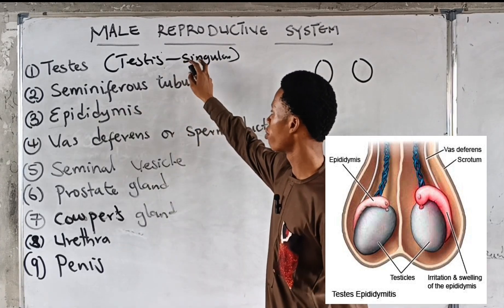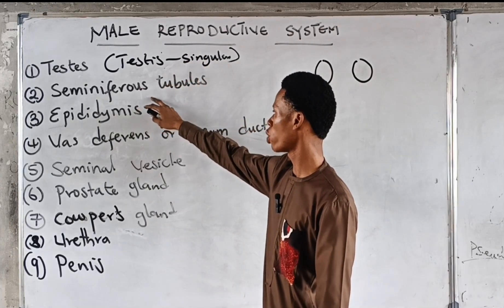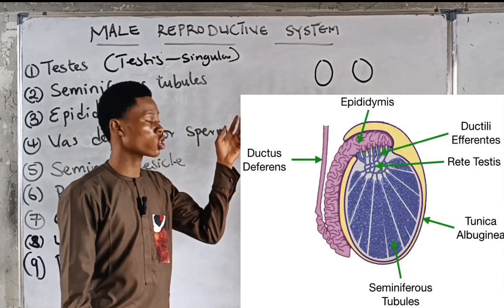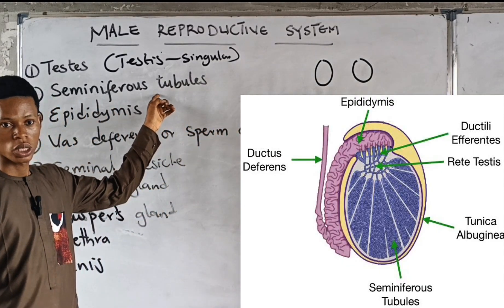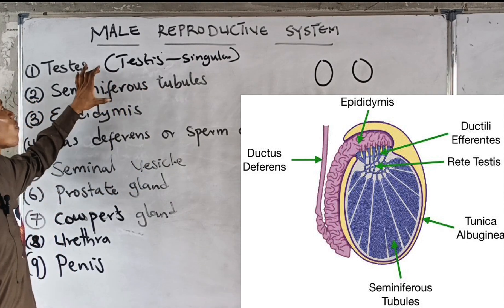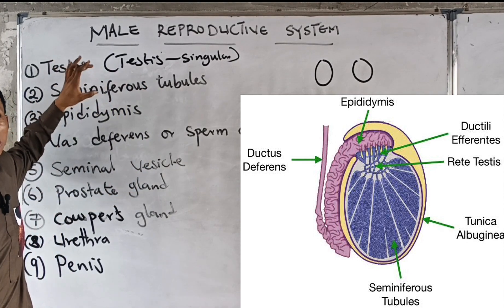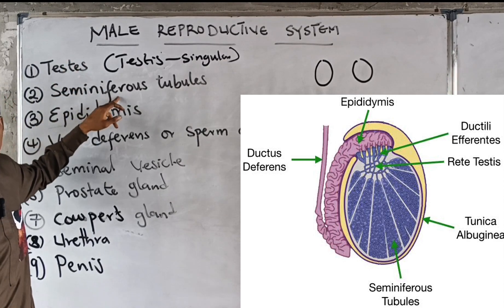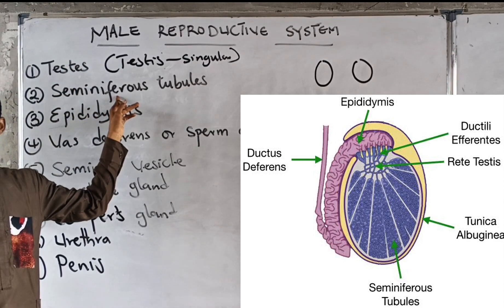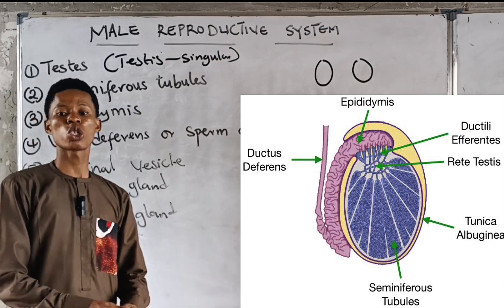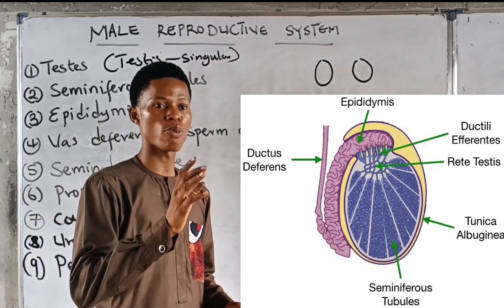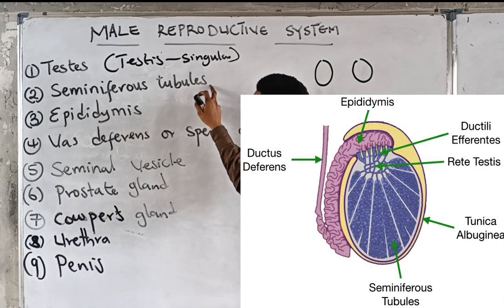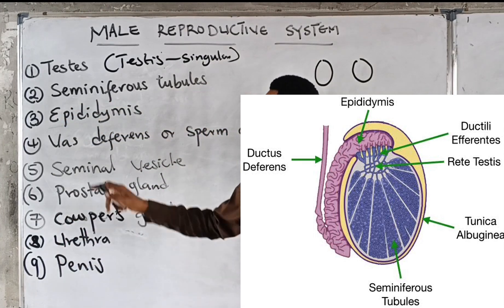The next part of the male reproductive system is the seminiferous tubules. Please take note: the function of the seminiferous tubules is to produce sperm. So if you are asked in an exam which part of the male reproductive system produces sperm, the answer is the seminiferous tubules. This is where sperm is produced.